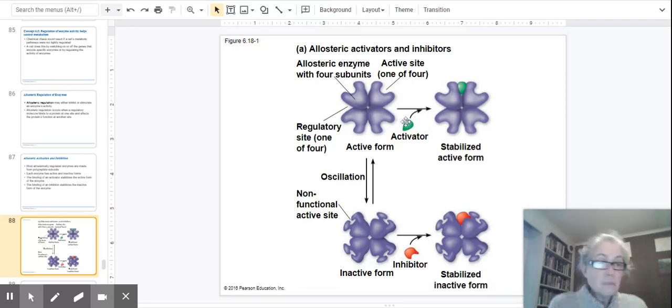It can bind to this enzyme in such a way as to prevent further oscillation and thus stabilize the active form of this enzyme. Similarly, there are molecules that can bind to the inactive form and stabilize it, and those would be inhibitory in their regulatory function. So activators and inhibitors to allosterically regulated enzymes simply prevent the enzymes from oscillating from active to inactive forms and stabilize one of those two forms.